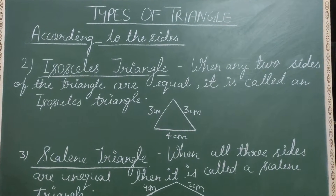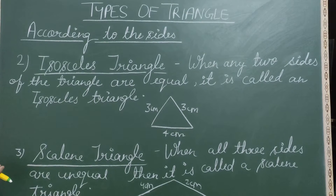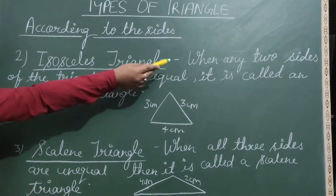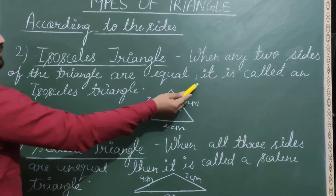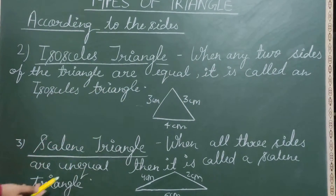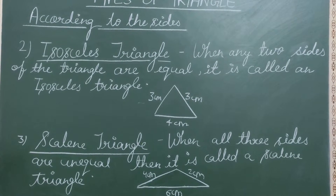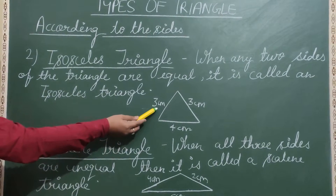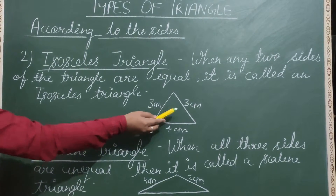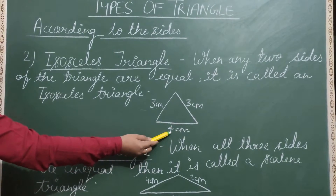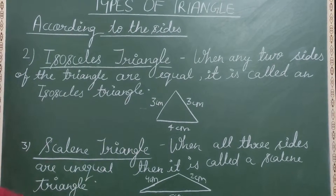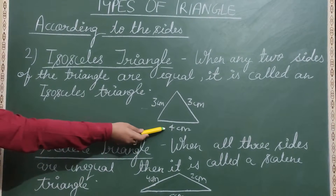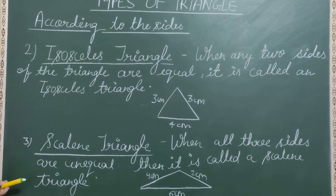The second type of triangle is the isosceles triangle. When any two sides of a triangle are equal, it is called an isosceles triangle. For example, in this triangle one side is three centimeters, another side is also three centimeters, and the third side is four centimeters. Since two sides are equal, this is called an isosceles triangle.